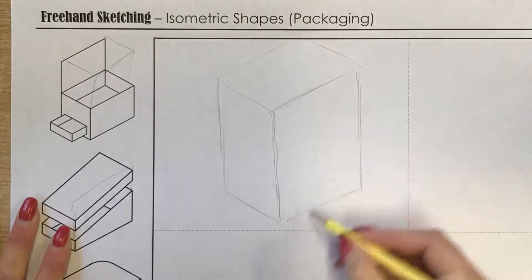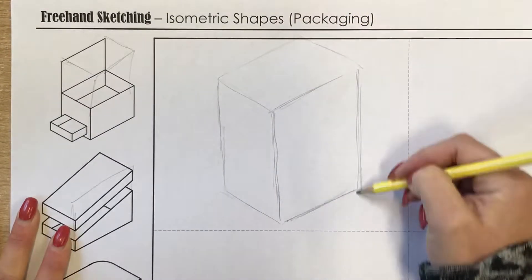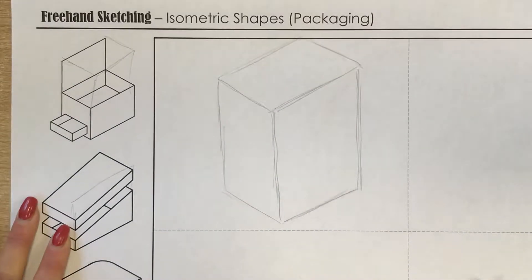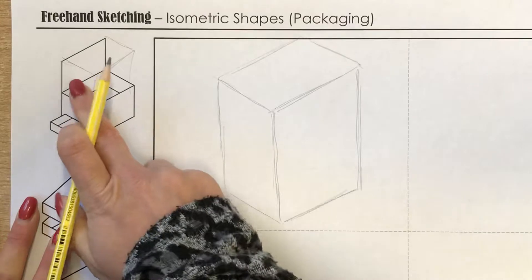You want to refer to the lines you've already drawn on your page in order to get them right. So that's my basic rectangle, because we can see it needs to go quite high for the lid.